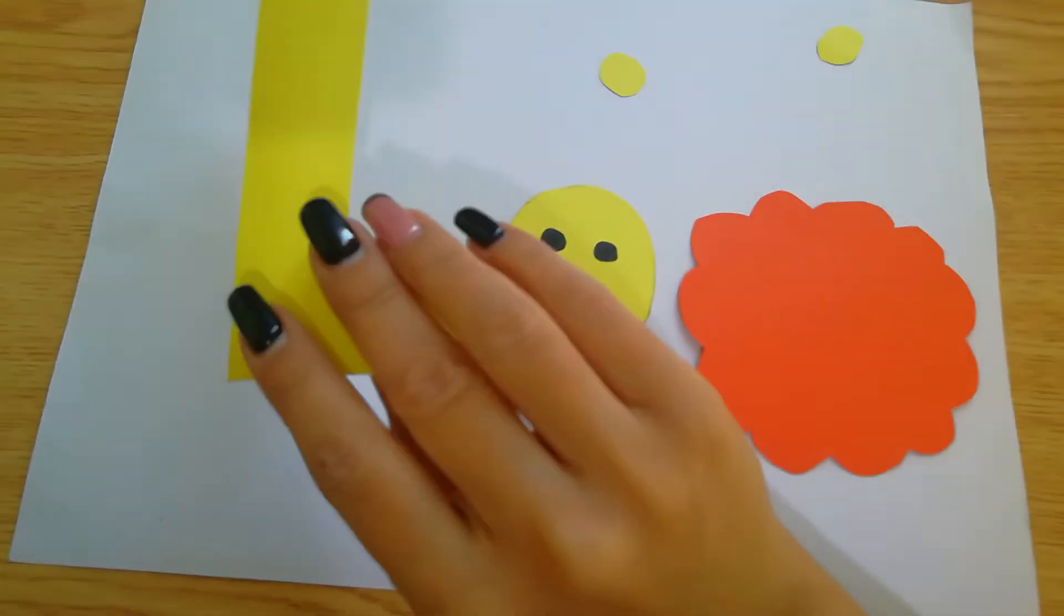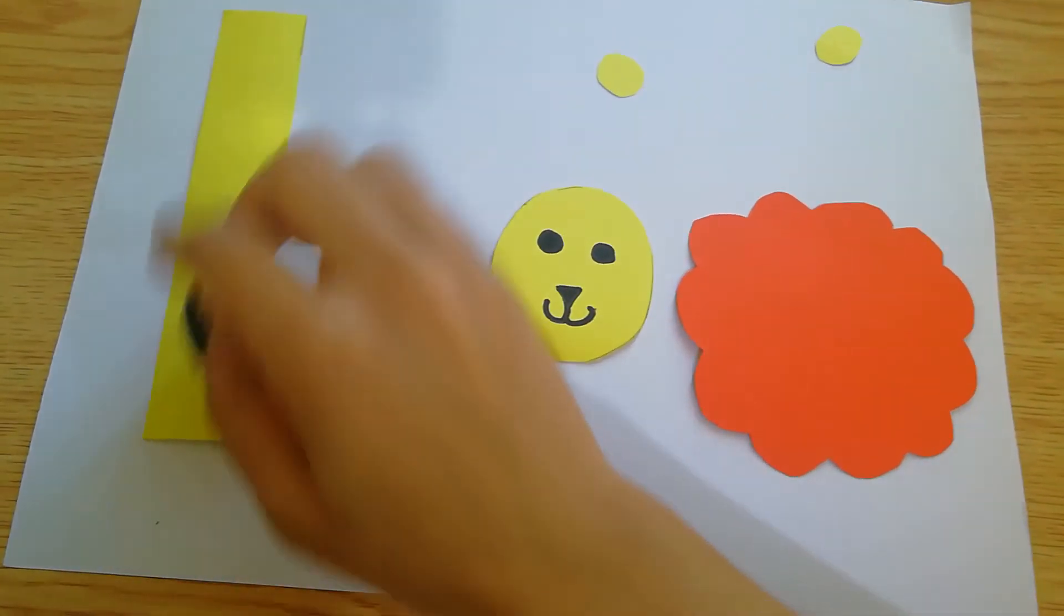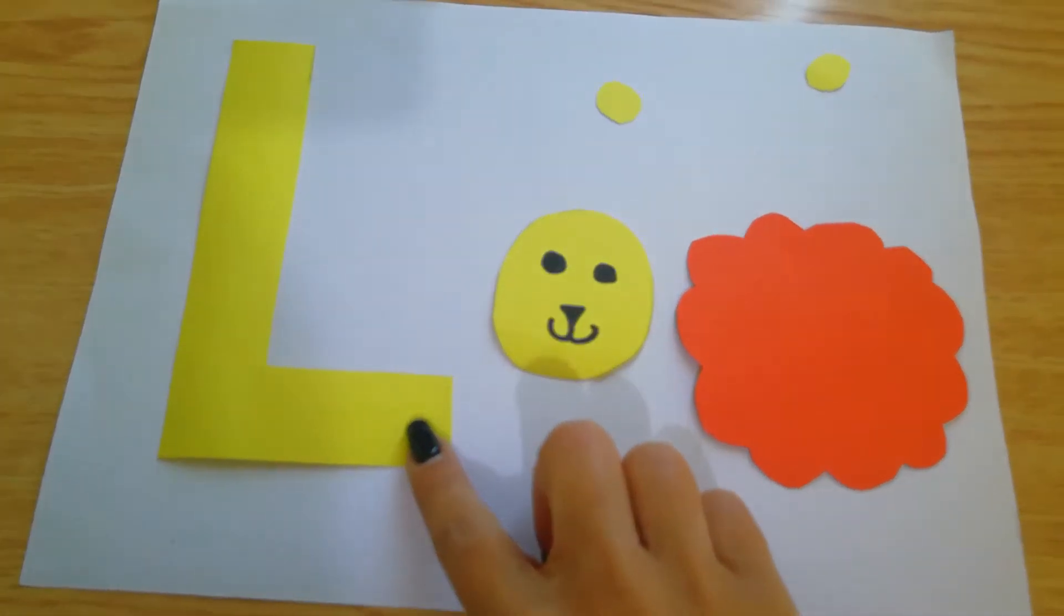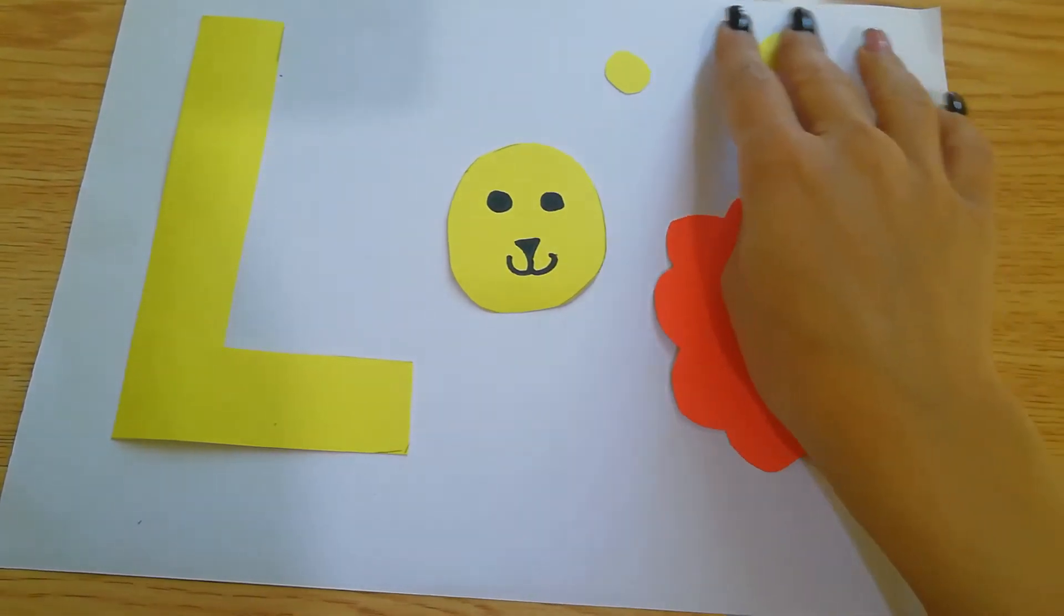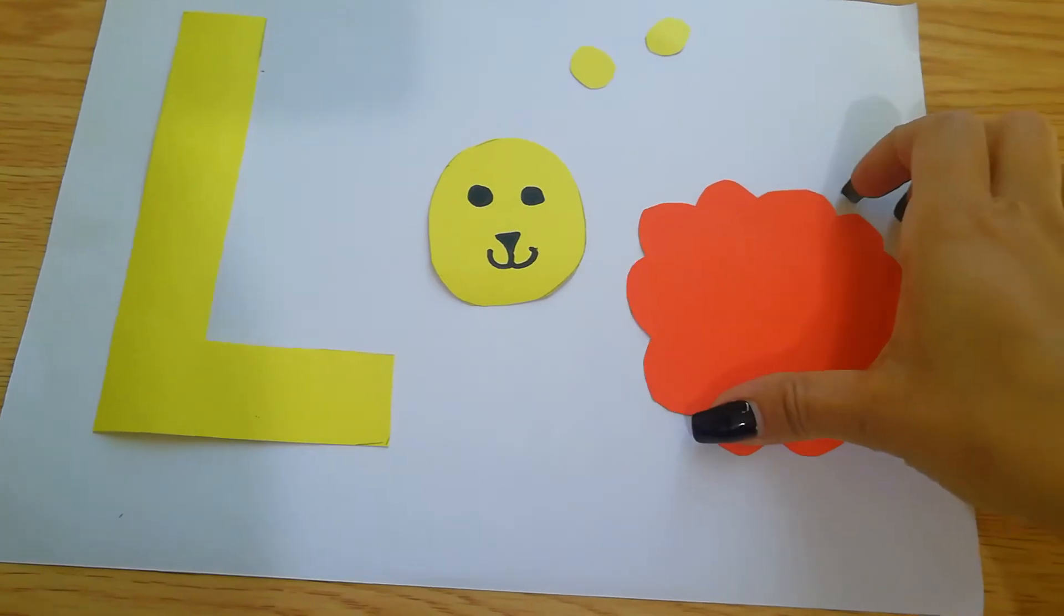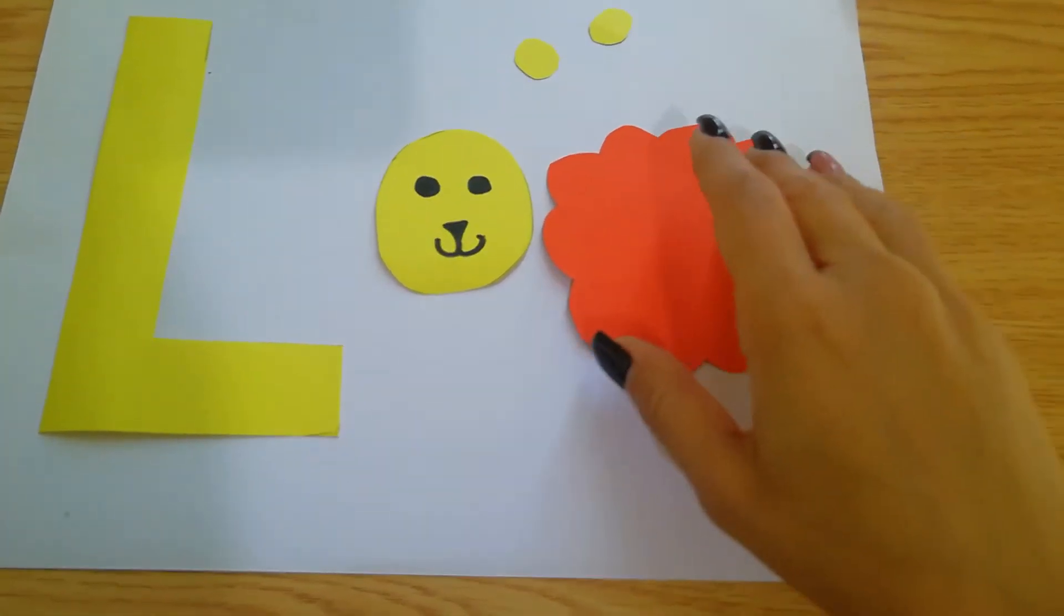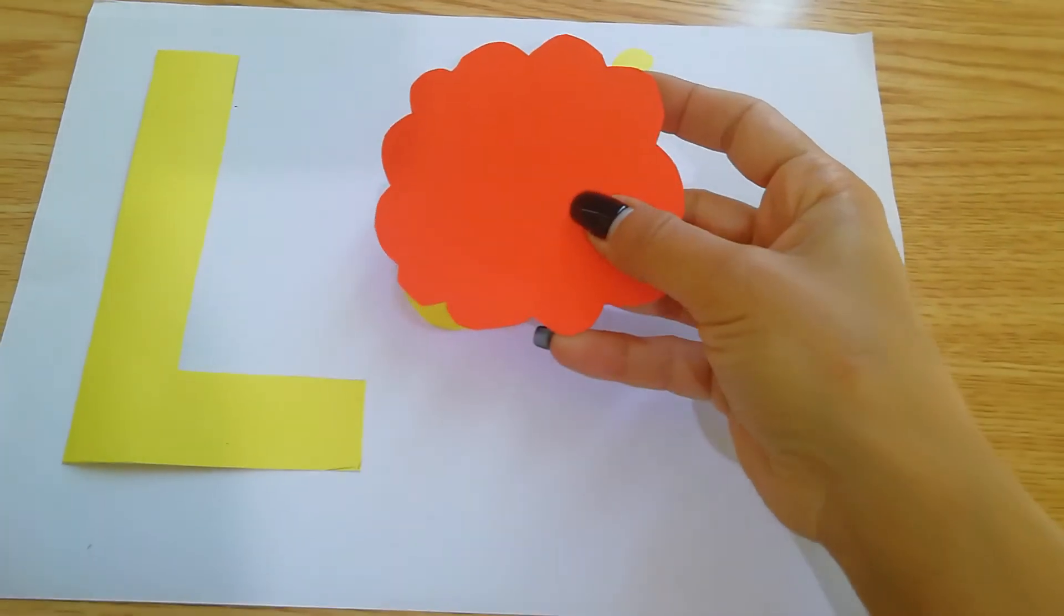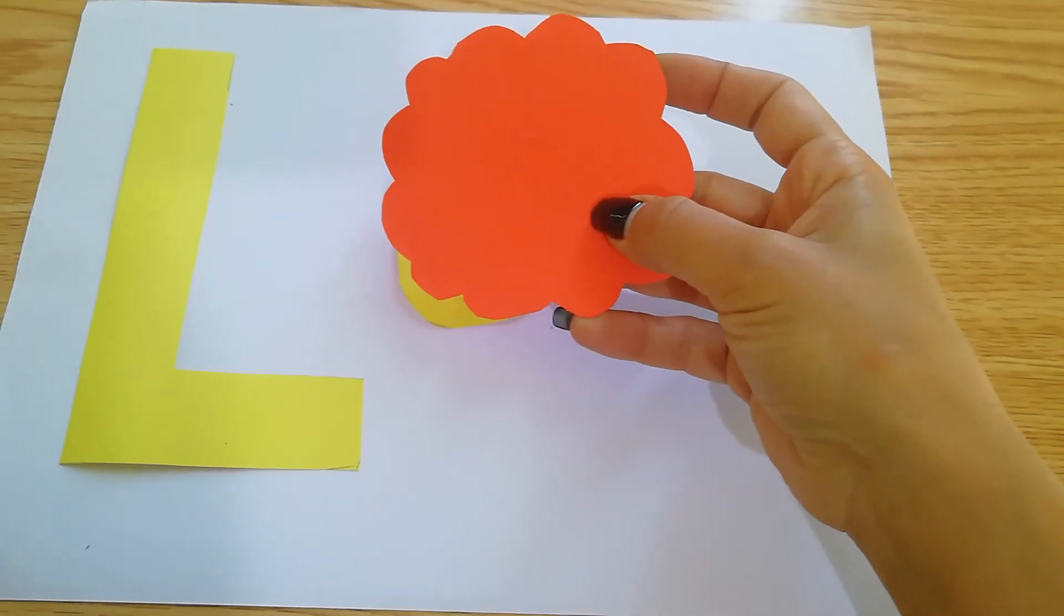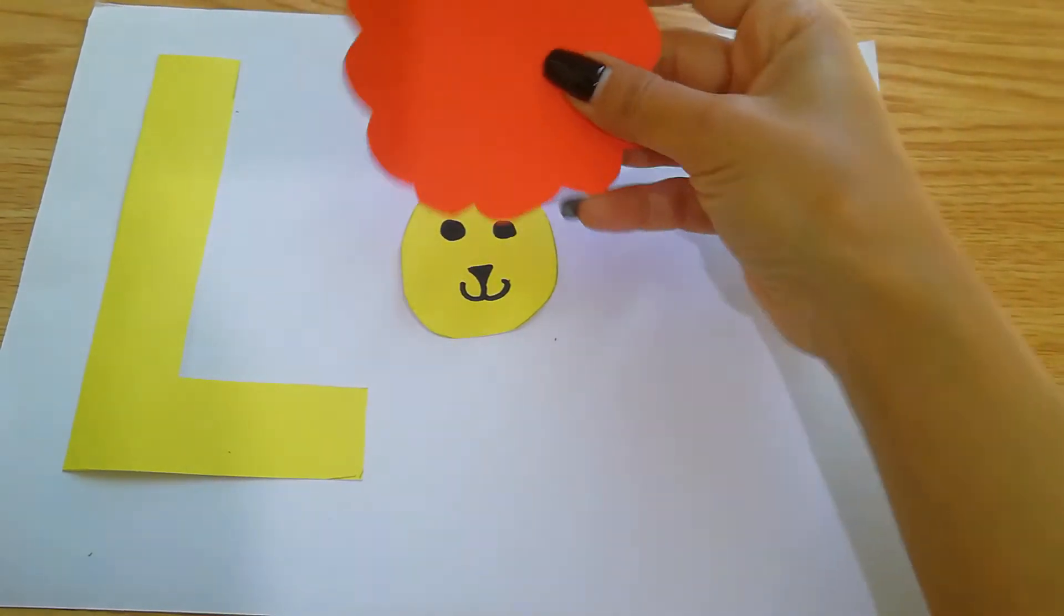Now, we need to cut out L, the shape of letter L, a circle, two circles, and one orange cardboard or paper like this, as if we're making a cloud.